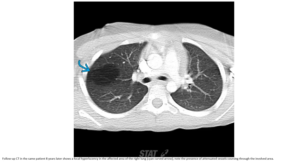Follow-up CT in the same patient at an older age shows a focal hyperlucency in the affected area of the right lung. Note the presence of attenuated vessels coursing through the involved area.